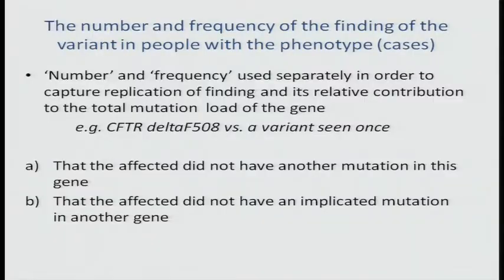It's essential that efforts are made to ensure there aren't other obvious explanations for a patient's phenotype. One would want to determine, in focusing on a particular variant, that the patient or individuals don't have other mutations in that gene. It's also important that the individuals being looked at don't have already known or suspected variants in other genes. It is surprising how often that's not done — you report that a mutation in a new gene may be causal, but there are already known genes for that condition that have not been well interrogated.